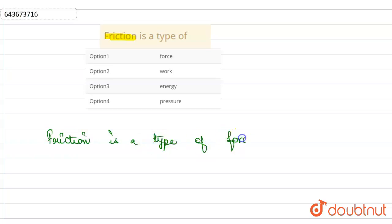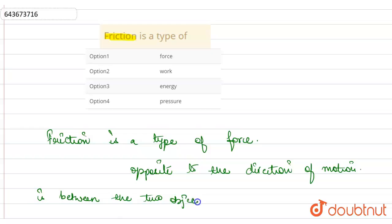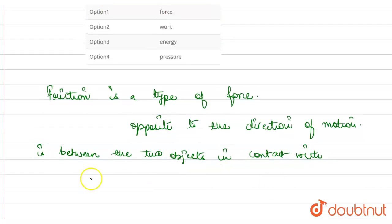Friction is a type of force and this is opposite to the direction of motion. And this friction occurs between two objects in contact with each other.